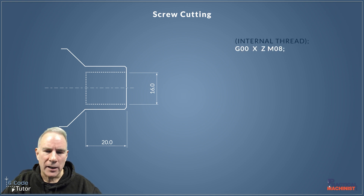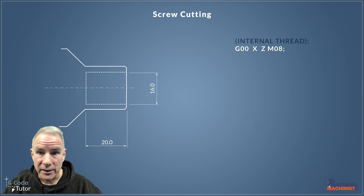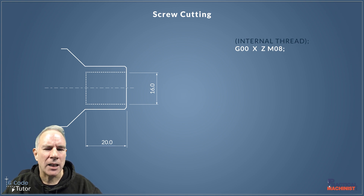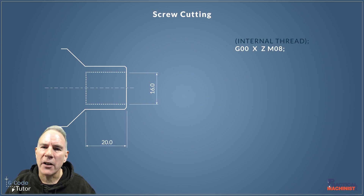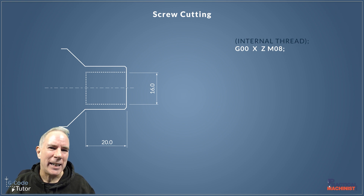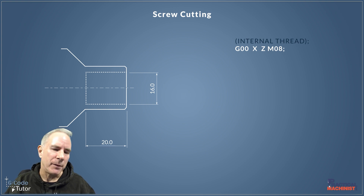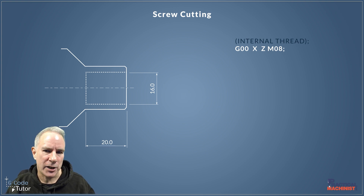Here's our first line, where we approach the start of our screw thread using a rapid code G00. Our X and Z dimensions are the start position — we need the Z to have a little bit of clearance. I normally allow five millimeters from the front face of the material. This way, if there's any backlash in the machine — there shouldn't be because we'll be using recirculating ball lead screws — a five millimeter run-in to the thread would eliminate any backlash.